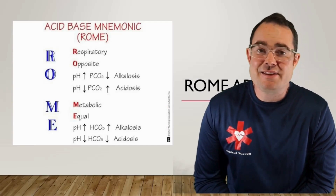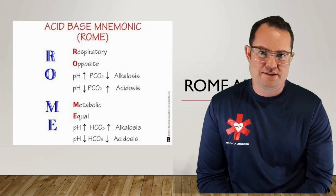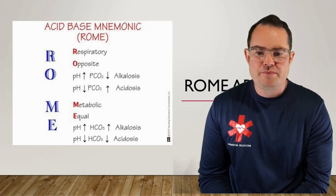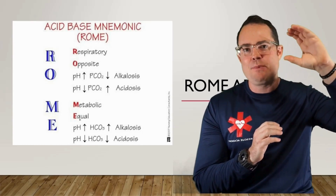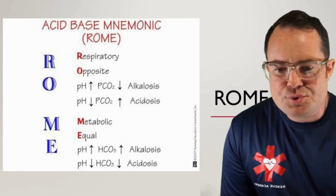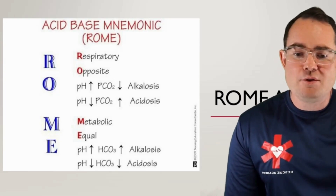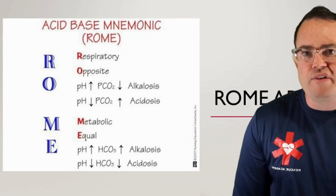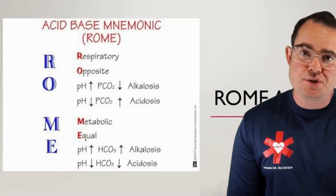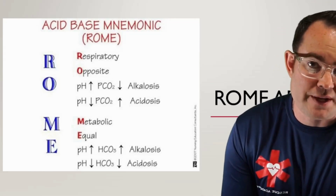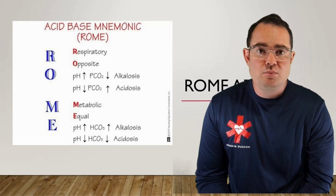Showing you this little graph saying 'respiratory opposite, metabolic equal' might not make the most sense yet. What I want you to do is write ROME out on a sheet of paper right now. Take the RO and space it a little bit higher than the ME. Next to RO, write pH, put a gap, then put PCO2 — those two values next to RO. Near ME, or metabolic equal, write pH, and then next to that write HCO3. Remember, you need to know those values of what is considered normal.